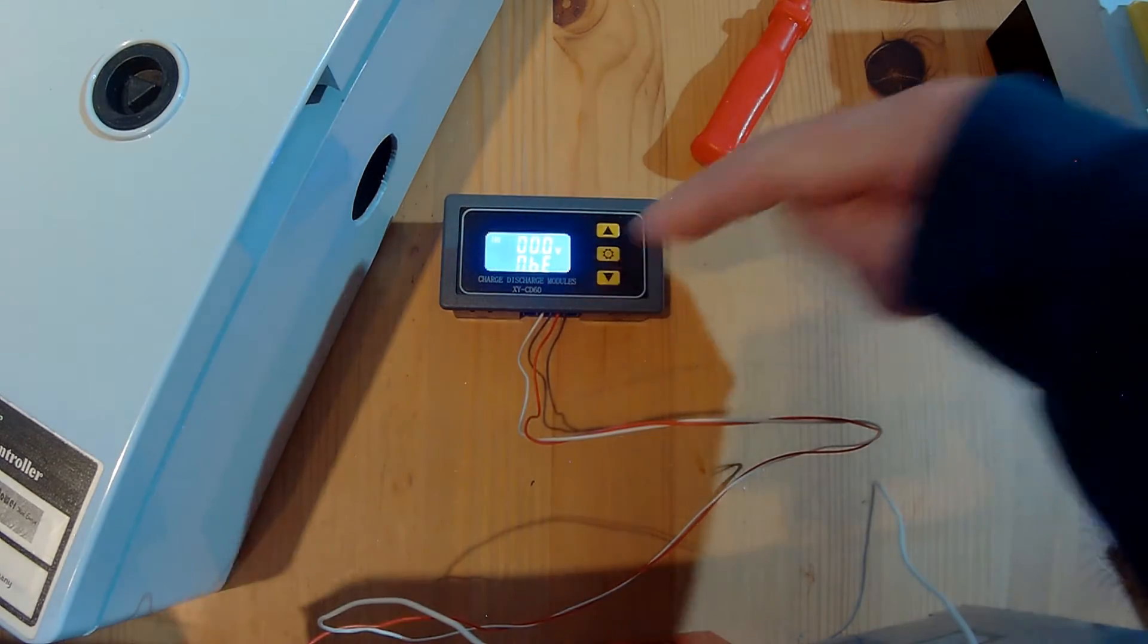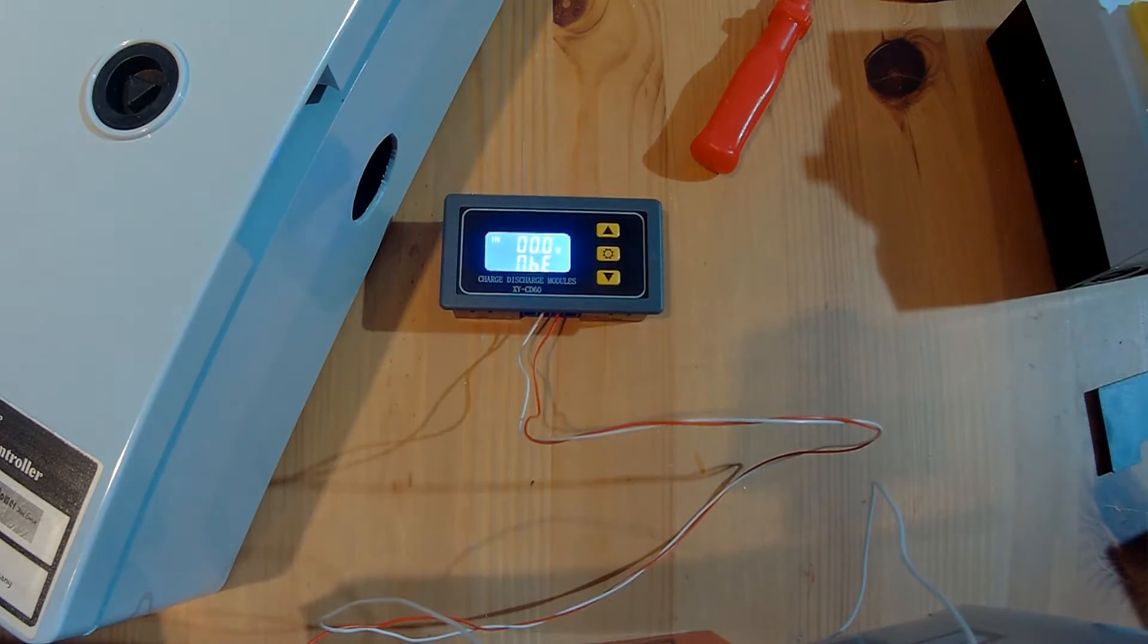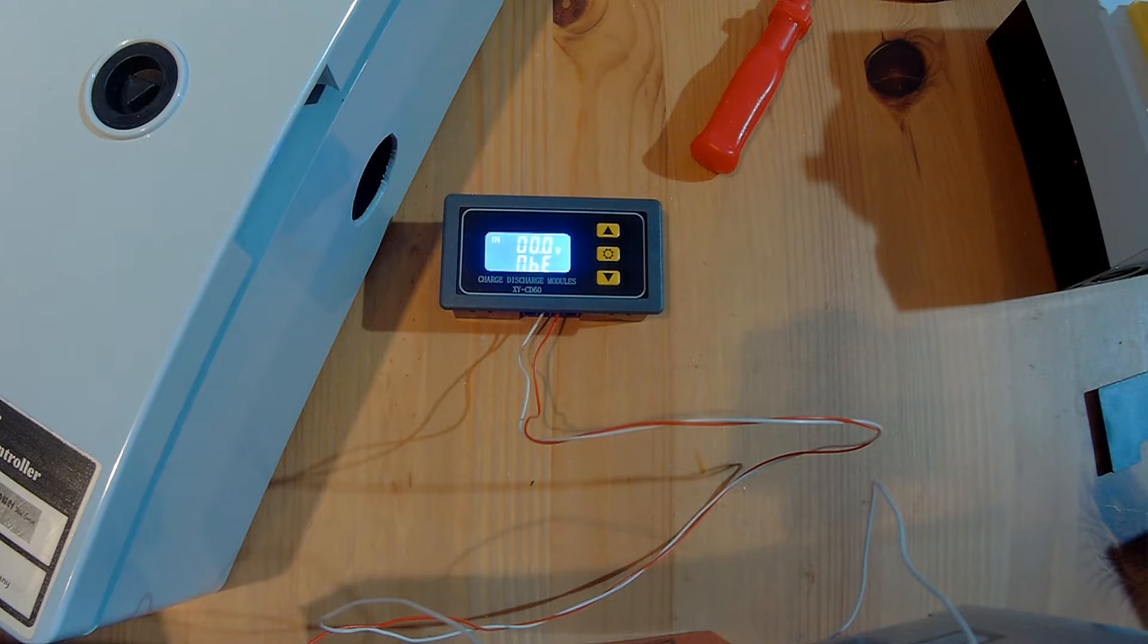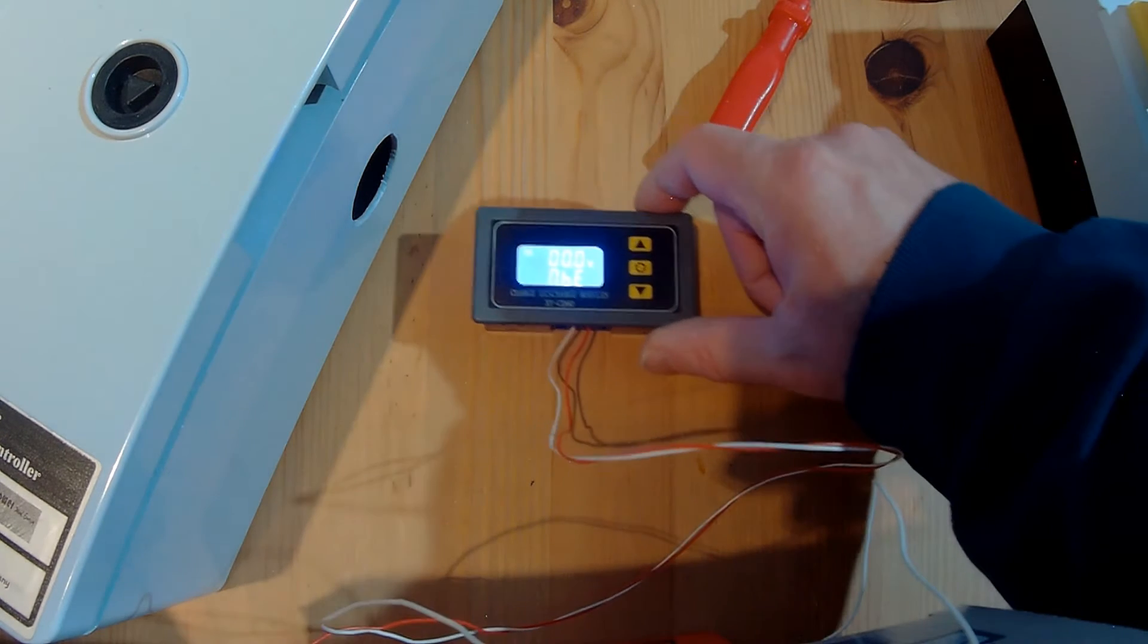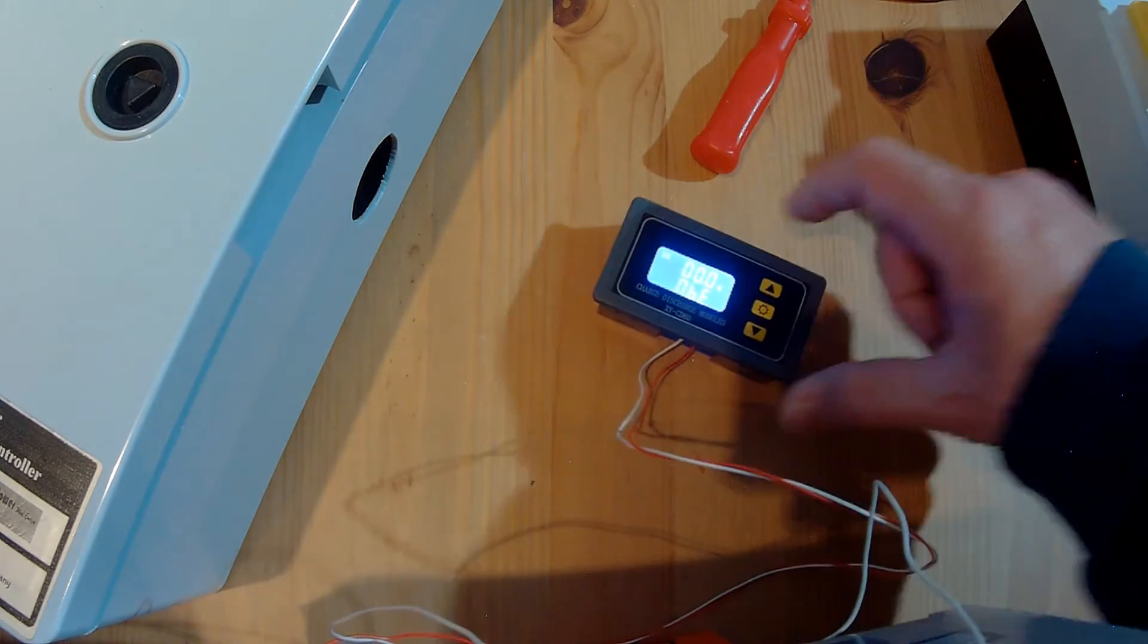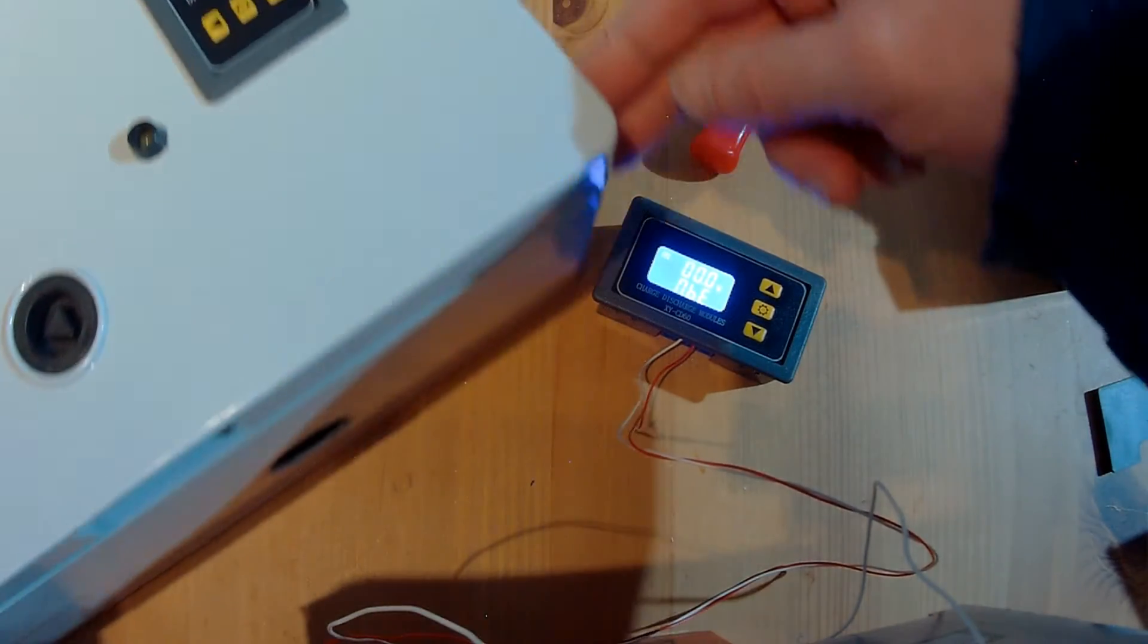Today I will show you how you can set up this XY CD60 control unit for correct voltages in a 12, 24, and 48 voltage system, for example for lithium-ion-phosphate batteries.